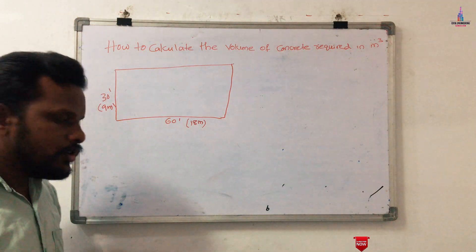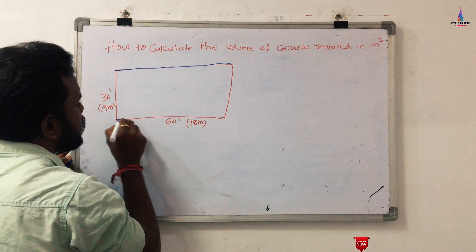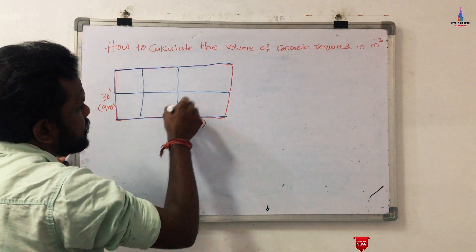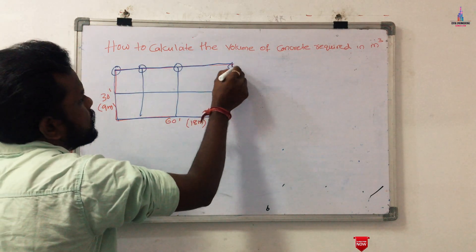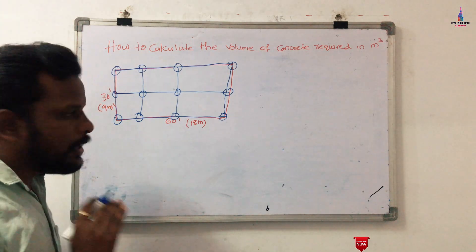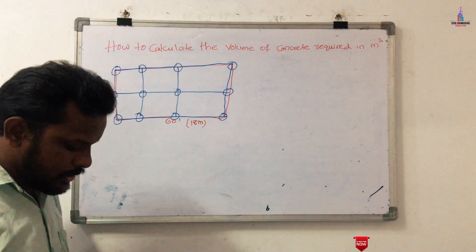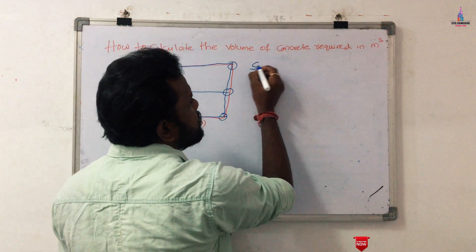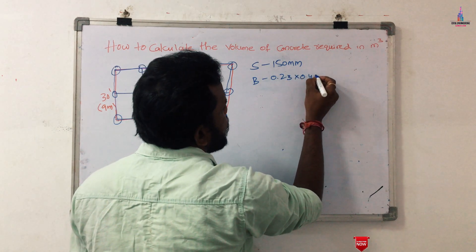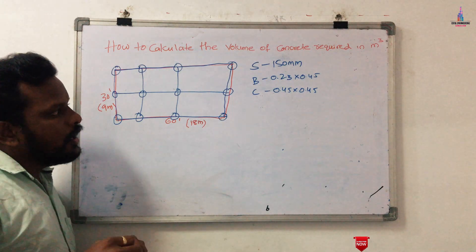I will cover how to calculate the volume of concrete required for the slab section, and also for the beam section. This is the beam layout diagram for this structural model, consisting of three horizontal beams and four vertical beams. The column positions are also shown. I am starting from ground level, not foundation level. Assumed values: slab thickness 150 mm, beam size 0.23 × 0.45 m, column size 0.45 × 0.45 m.